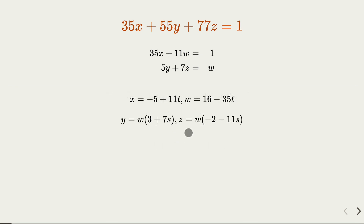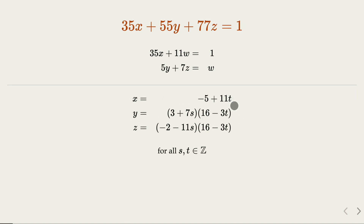We have two parameters s and t, and an intermediate value w. Then x, y can be expressed in s and t — w in return can be expressed in terms of t. So the solution here is x, y, z with s and t as parameters. That's the first method: split into two linear Diophantine equations with two unknowns each, then combine the results.